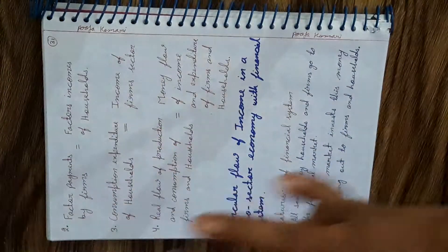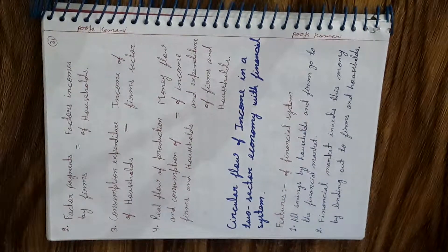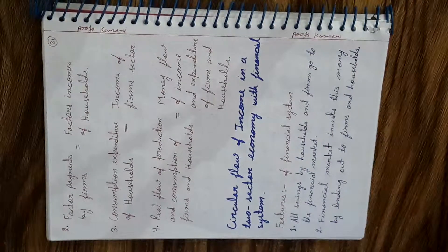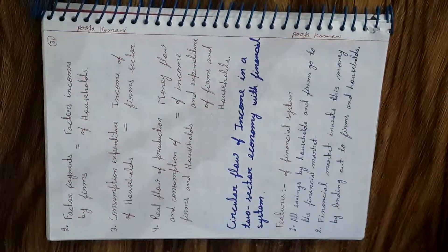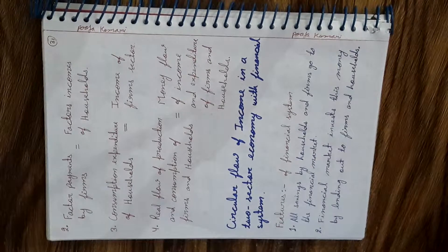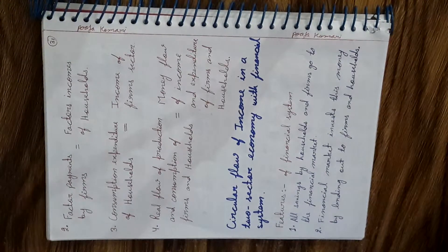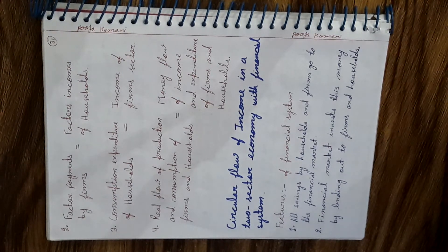Third relationship: consumption expenditure of households should equal the income of the firm sector. If firms produce final goods worth 100 rupees and sell them in the market, households buy them for 100 rupees — consumption equals income. Fourth relationship: the real flow of production and consumption between firms and households should be equal to the money flow of income and expenditure between firms and households. If there is confusion about real flow and money flow, go back to my earlier videos in this series. This is all about the two-sector economy — thank you so much, have a great day.